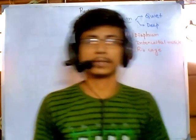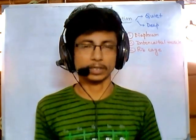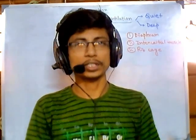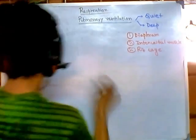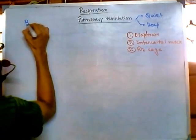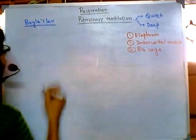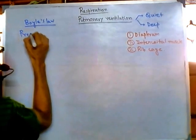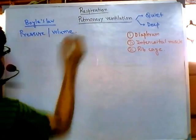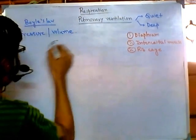To understand how we take in oxygen and release carbon dioxide — how this whole machinery works — you need to understand one fundamental law called Boyle's Law of pressure and volume. Let me talk a little bit about Boyle's Law.